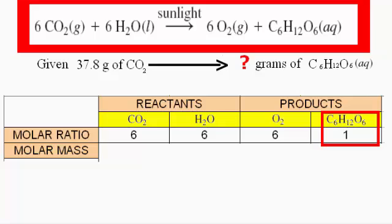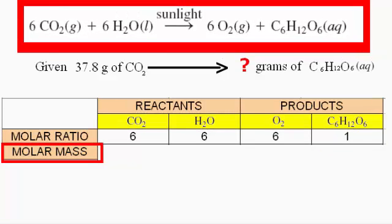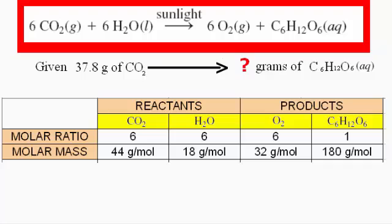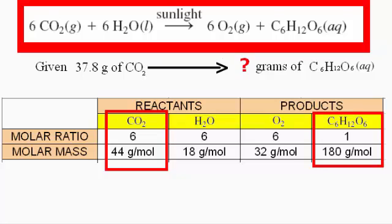Now that we know the molar ratio, what we're really concerned about is the mass of glucose that will be yielded from this equation. So now we have to move on to molar mass, because combined with the molar ratio, it will allow us to calculate the final yield of glucose. I've filled in the molar mass for all of the reactants and all of the products. What we're concerned about in this question is the molar mass for carbon dioxide, which is 44 grams per mole, and the molar mass of glucose, which is 180 grams per mole.